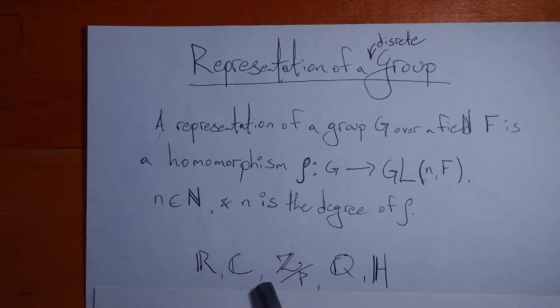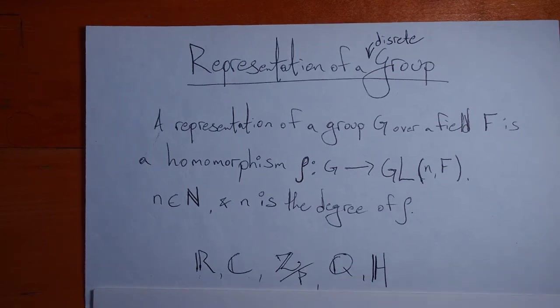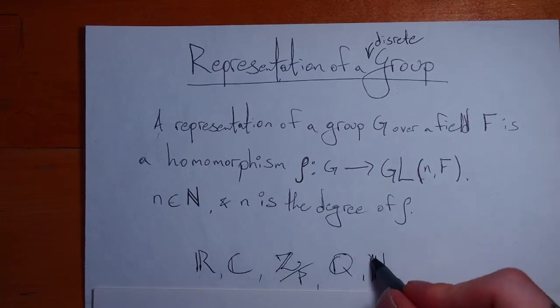You could use the integers mod P, where P is a prime. You could use the rational numbers. You could even use the quaternions, denoted usually with an H, for Hamilton, who discovered them. But they're not commutative. I'm going to leave them out for the purposes of our videos.